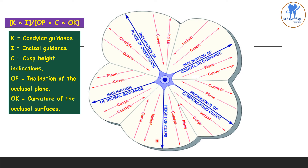When the height of cusp increases, then the plane of orientation and the curves decrease and the condylar and incisal cadence increase. When the inclination of the incisal cadence increases, then the condylar cadence decreases and other factors — cusp height, compensating curves, and plane of orientation — increase. When the inclination of the plane of orientation increases, then cusp height decreases and the incisal and condylar cadence increase. This is about Hanau's quint in combination with Thielmann's formula.